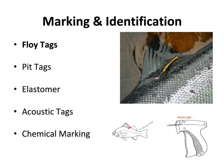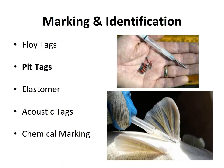We use floy tags a lot in mark-and-recapture studies — we catch a fish, measure it, put the tag in, and release it. Later, fishermen or we might recapture it. We can use the time between the two captures and the growth of that fish to estimate the growth rate. We can also use the proportion of tagged versus untagged fish in the recaptures to estimate population abundance.